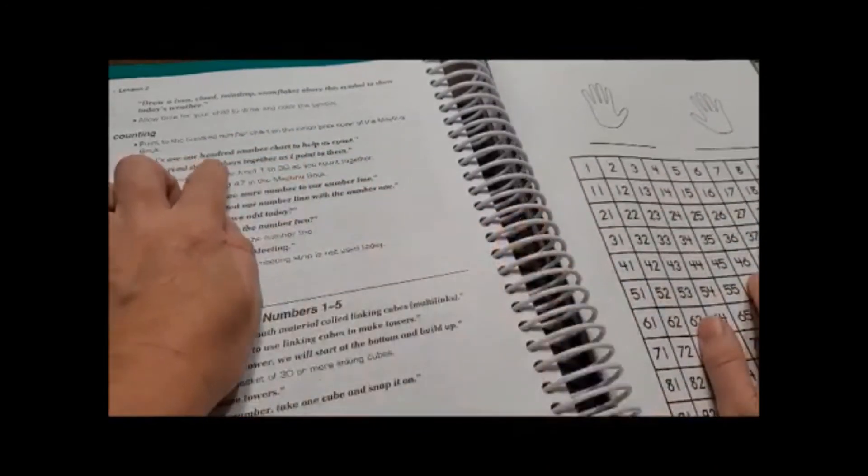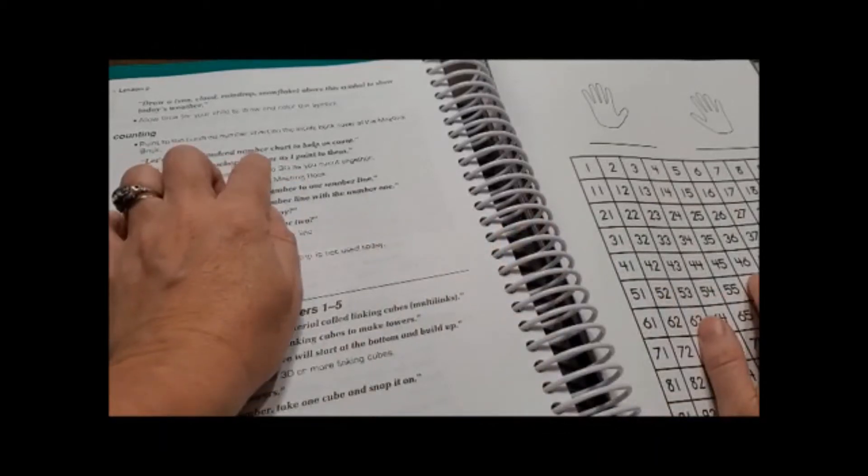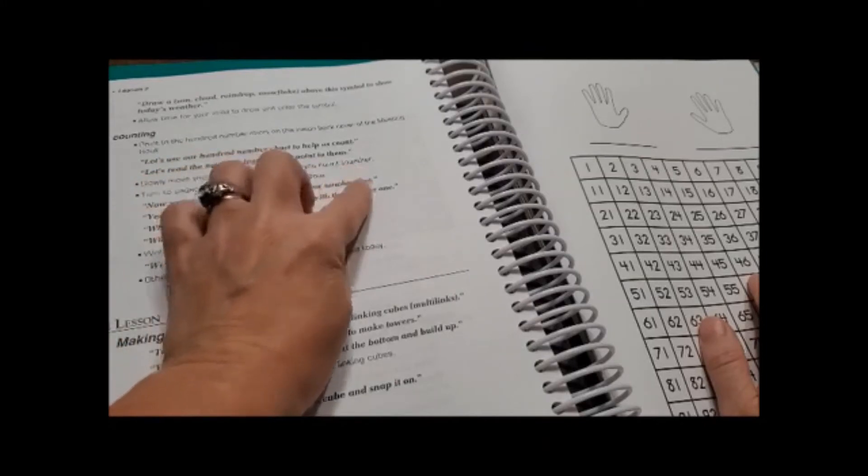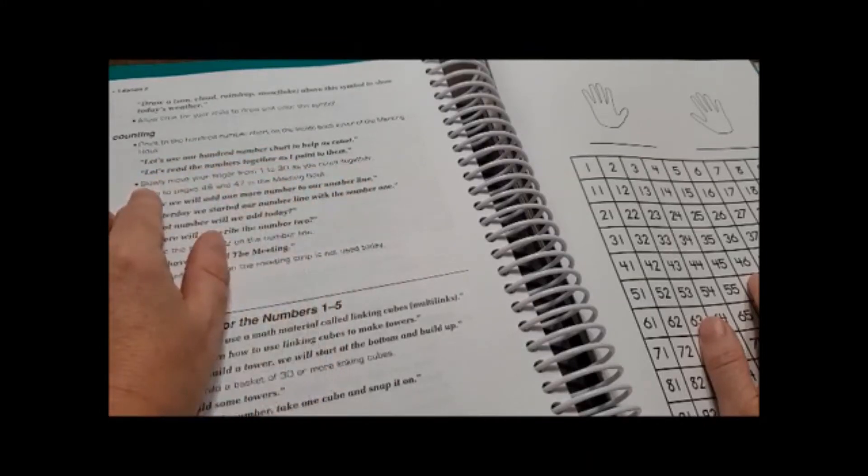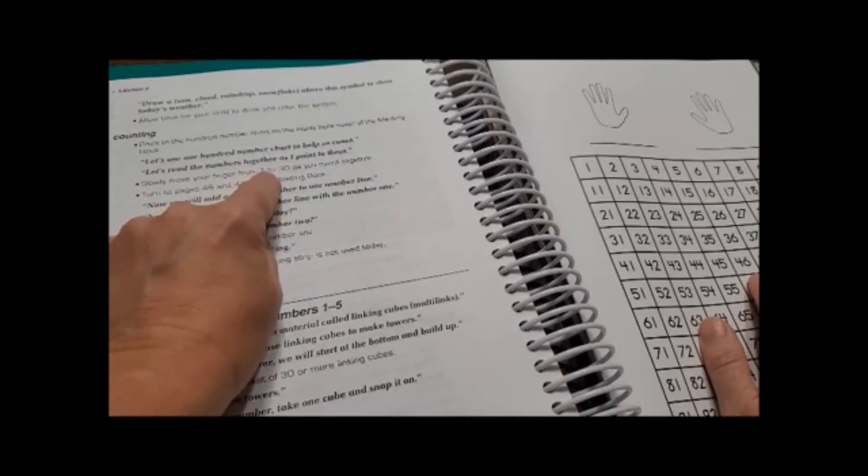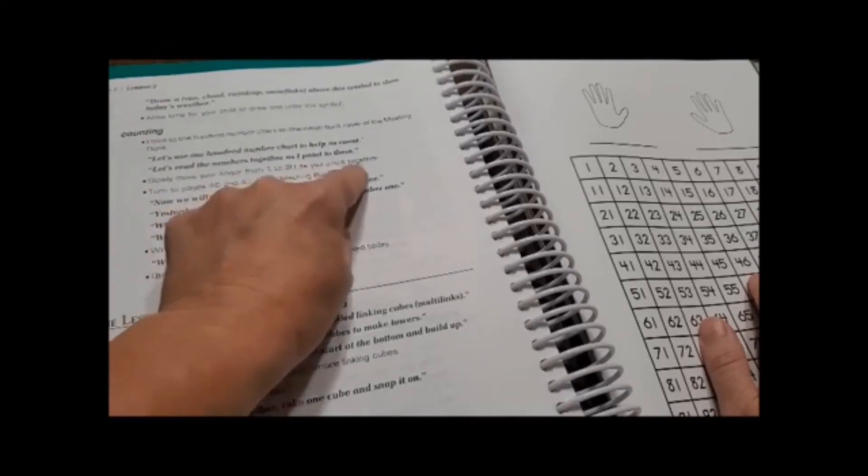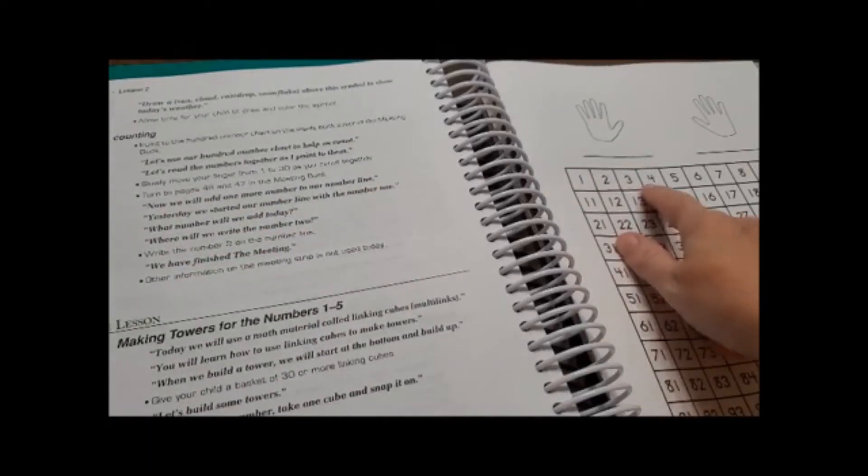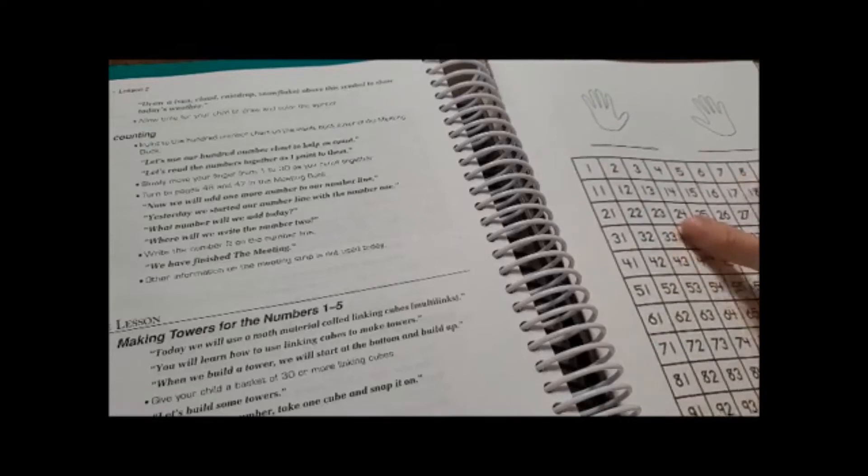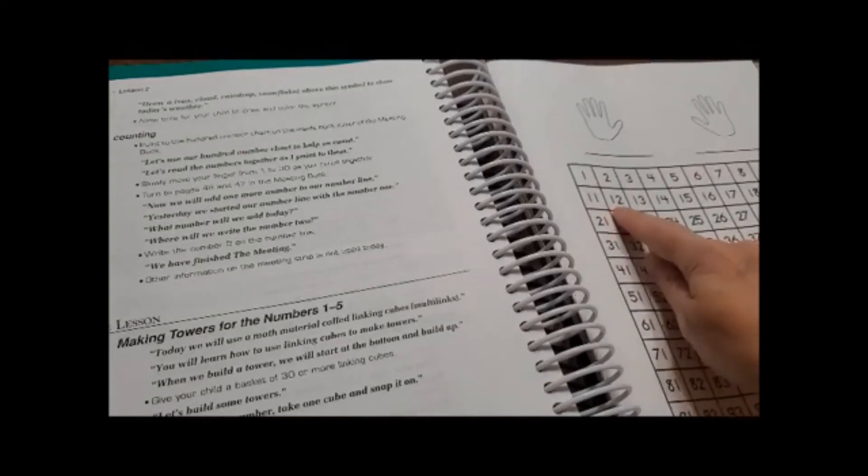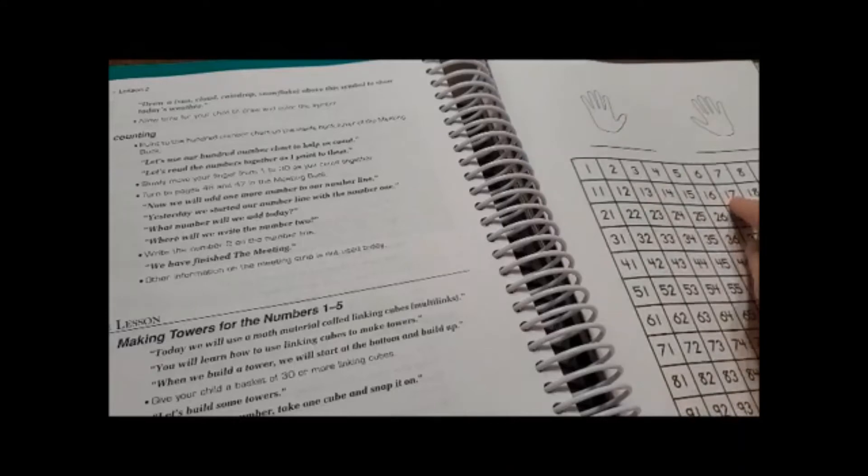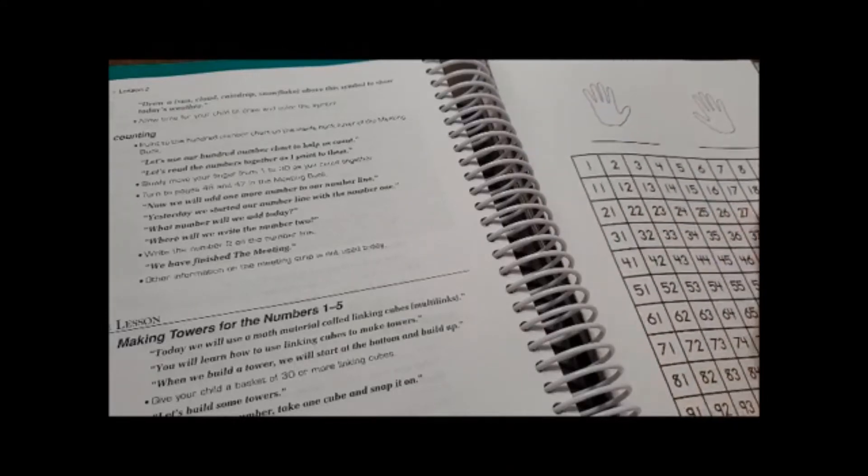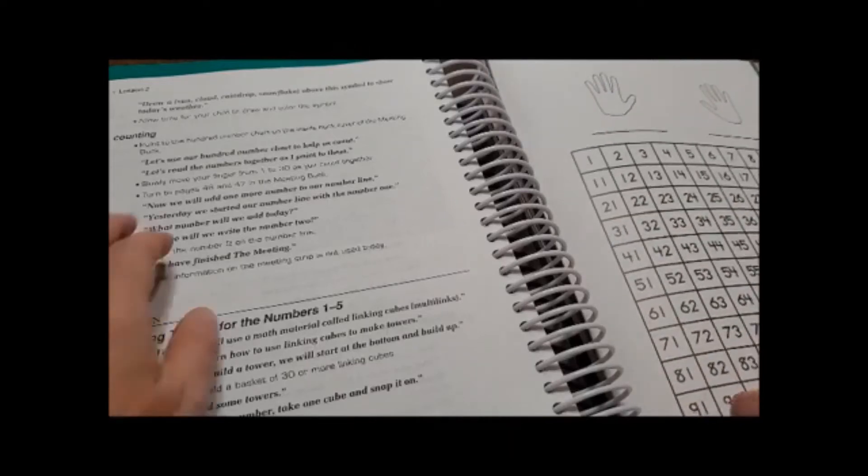And then it says slowly move your finger from one to thirty as you count each together. So one, two, three, four, five, six, seven, eight, nine, ten. Good job.